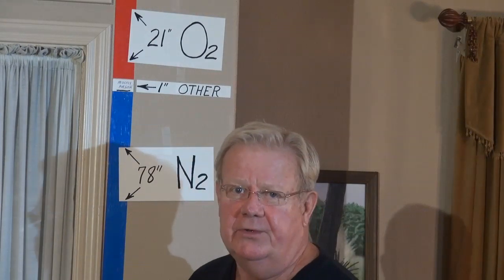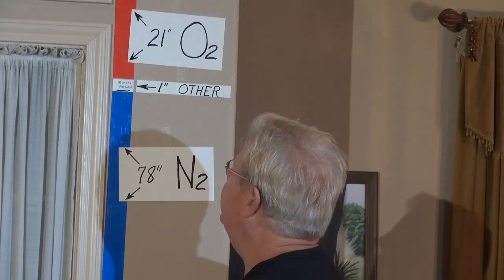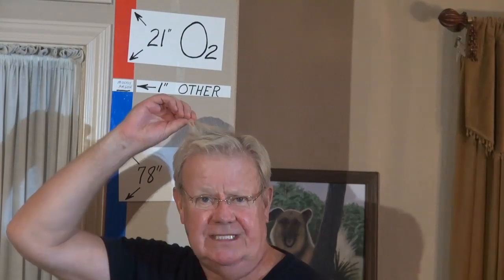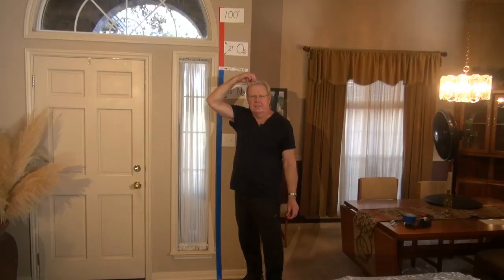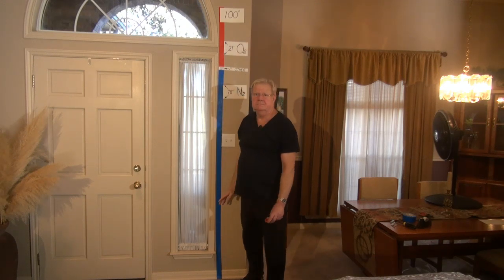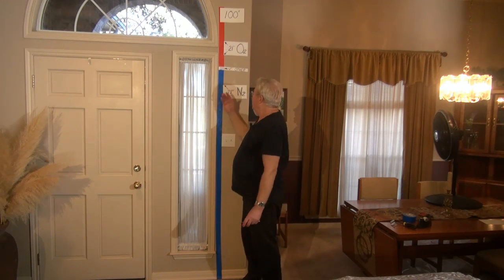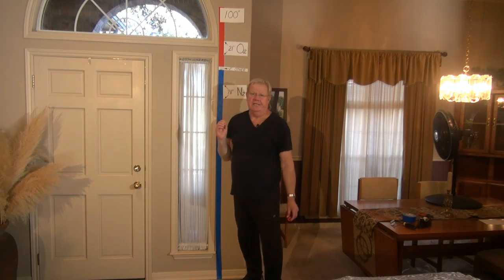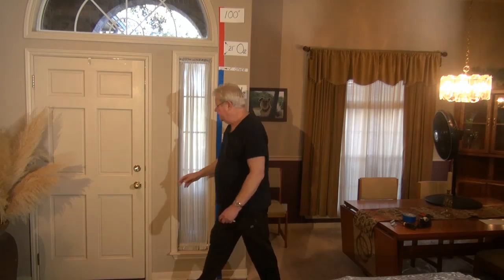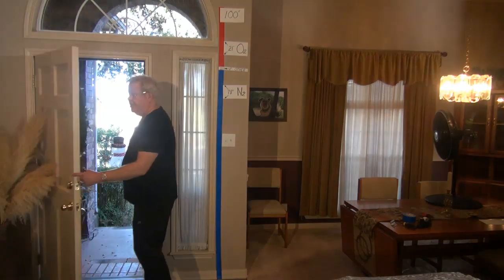What is one one-hundredth of an inch? One one-hundredth of an inch is about three human hairs' thickness — it's ten thousandths of an inch. Three human hairs on this entire wall. It's hard for me to get really excited about the imminent threat from carbon dioxide when it's only three human hairs. I think I'll go outside and get some fresh air.